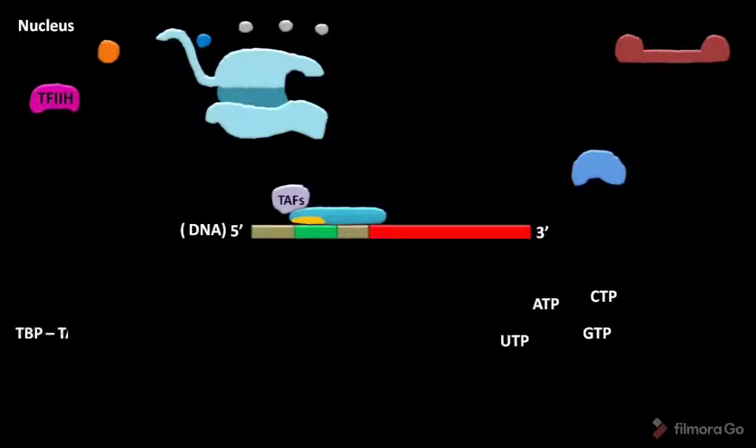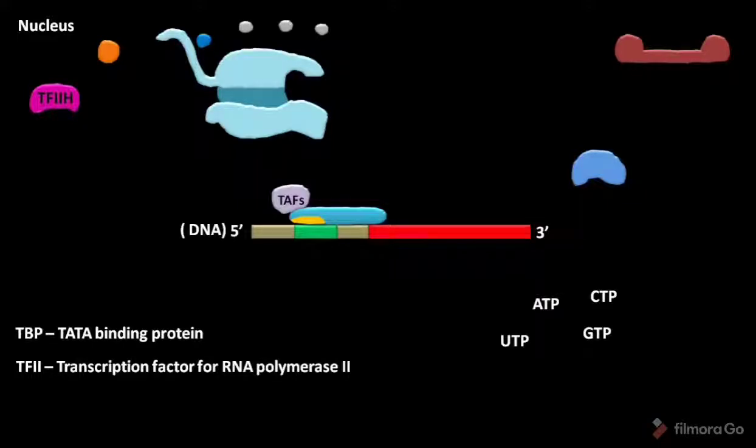TBP stands for TATA binding protein. TFIID stands for transcription factor for RNA polymerase II. TFIID is also composed of TAFs. TAFs stands for TBP associated factors.